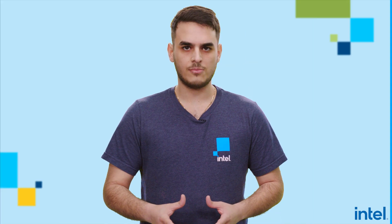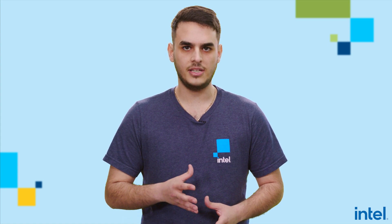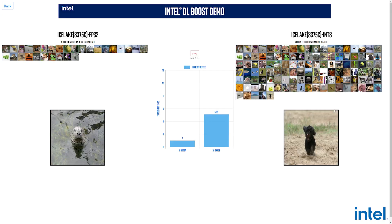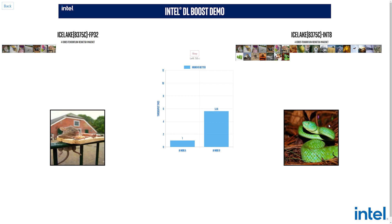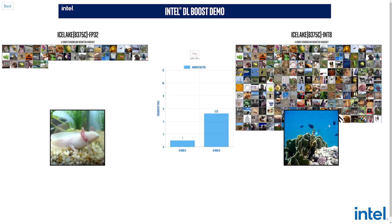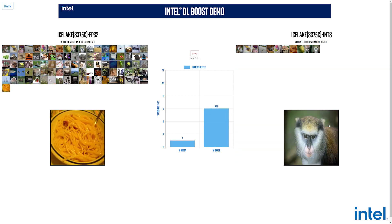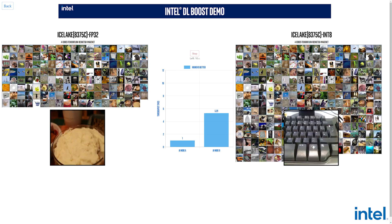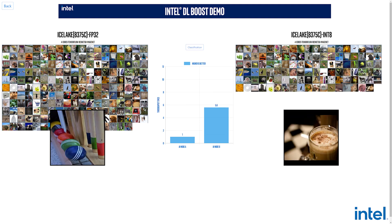Image object detection is one of many use cases for AI deployment that can be computationally expensive. In this live demo, we prepared and trained a YOLO V3 model on the cloud using TensorFlow to detect and draw bounding boxes around various objects. Let's take a look at the performance gain we can achieve using Intel optimizations for TensorFlow by running inference on our trained models.